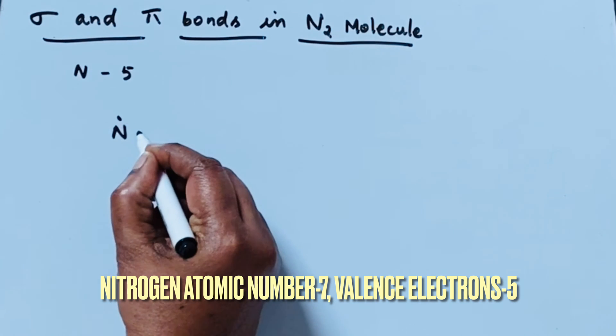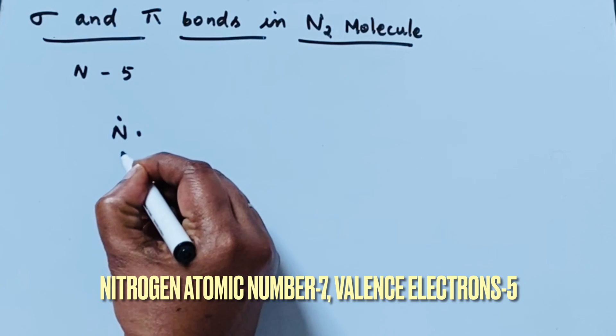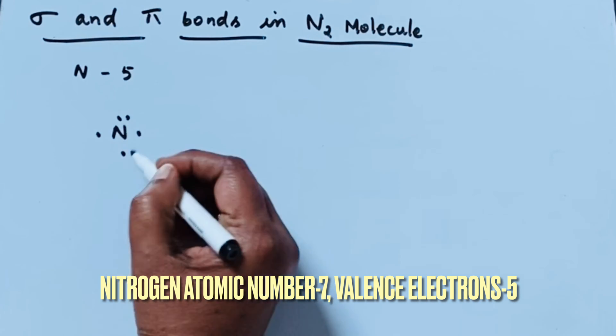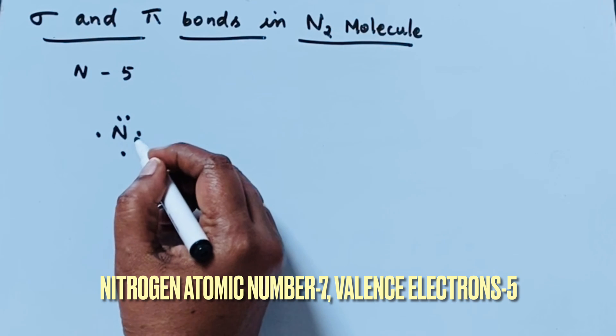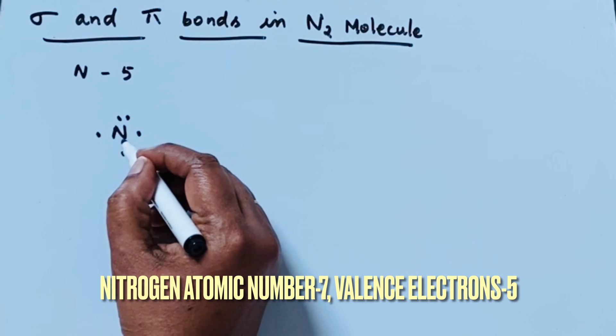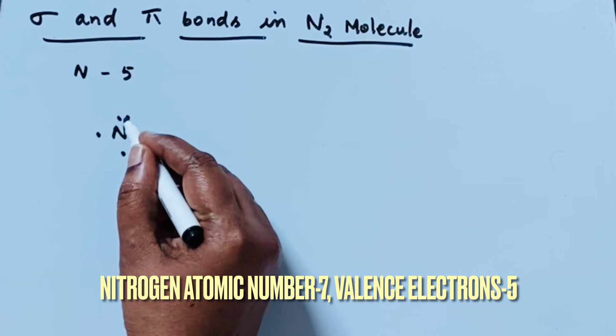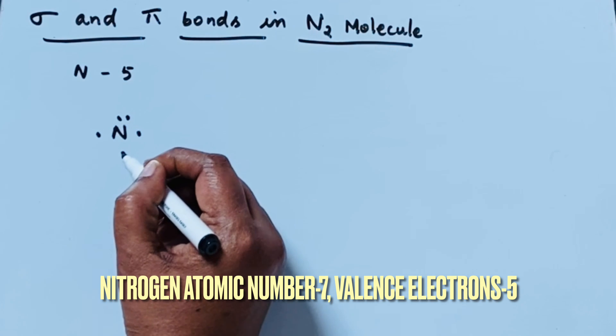Counting the valence electrons: 1, 2, 3, 4, 5. This means the nitrogen atom has 3 unpaired electrons and 1 lone pair electron.